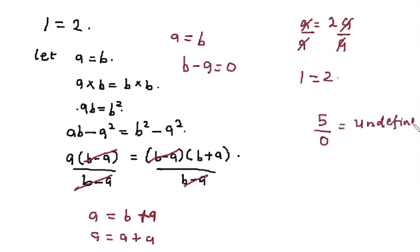Okay. So the proof from here onwards, the point where I'm dividing both sides by B minus A is invalid. So this part does not work out. That is why 1 is not equal to 2.